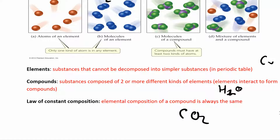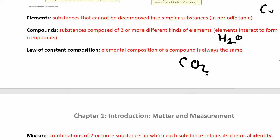For carbon dioxide you always have one carbon for every two oxygens. This is always the same no matter what sample you examine — otherwise it's a different compound. CO₂ is carbon dioxide, which is different from CO (carbon monoxide), where you have one carbon for every one oxygen. These are different compounds because they have different elemental compositions.